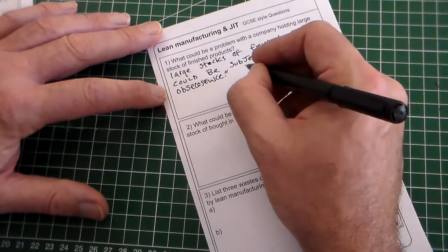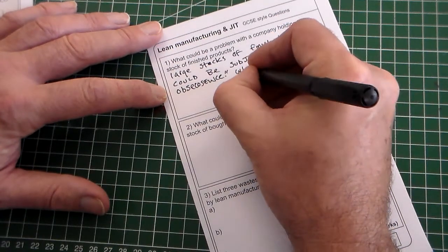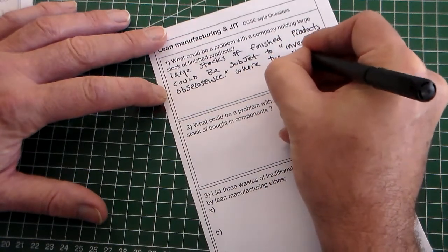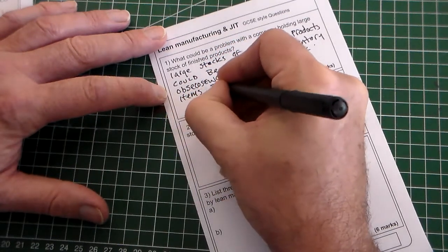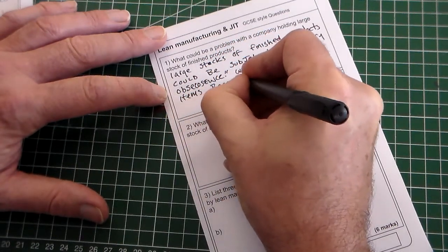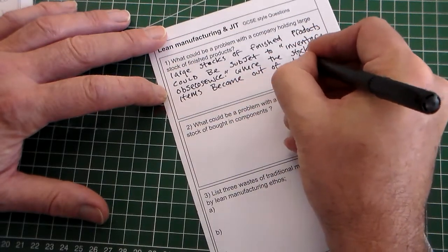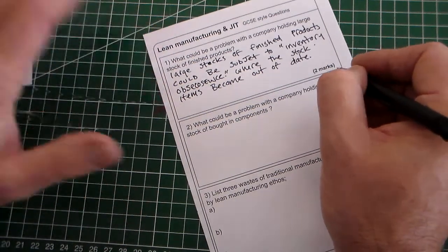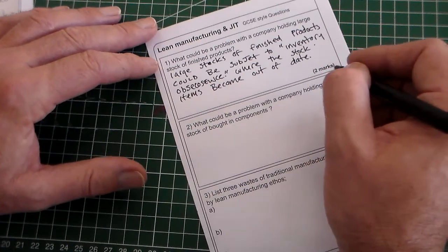Inventory obsolescence is where the stock items become out of date. So basically it means the stuff's held in stock and for design changes or customer demand changes, the parts are no longer usable.